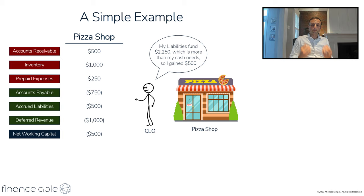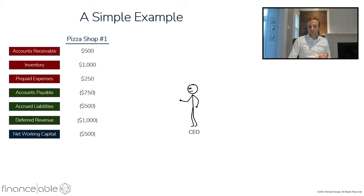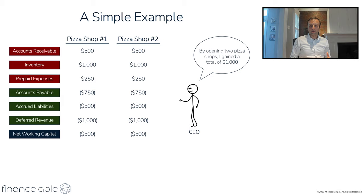Now let's look at opening a second pizza shop. If we open a second pizza shop with that same dynamic of negative working capital, the working capital just doubles. And instead of having a gain of $500, we have a gain of $1,000. So we've doubled our gain.